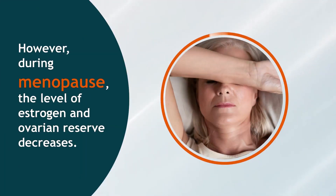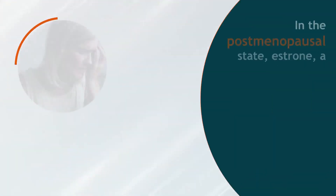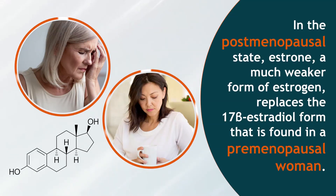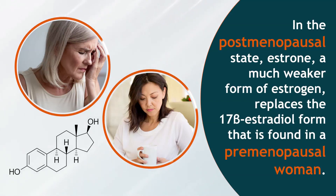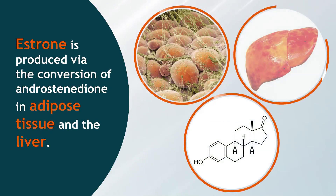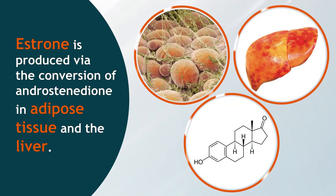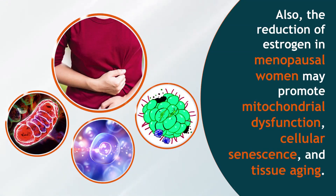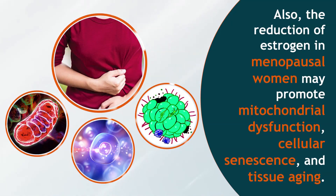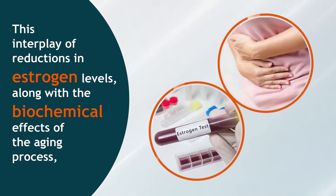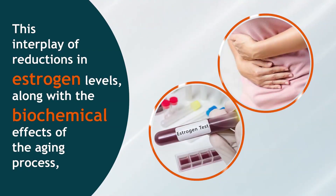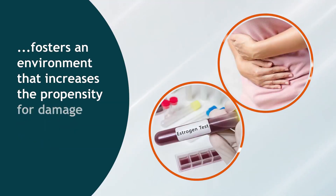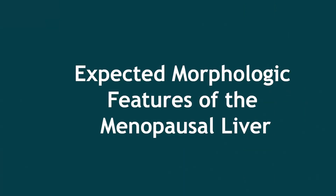During menopause, the level of estrogen and ovarian reserve decreases. In the postmenopausal state, estrone — a much weaker form of estrogen — replaces the 17-beta estradiol form found in a premenopausal woman. Estrone is produced via the conversion of androstenedione in adipose tissue and the liver. The reduction of estrogen in menopausal women may promote mitochondrial dysfunction, cellular senescence, and tissue aging, fostering an environment that increases the propensity for liver damage.